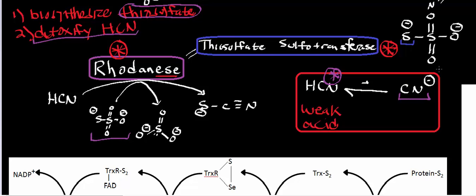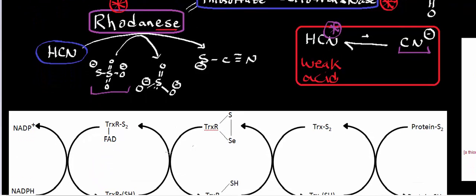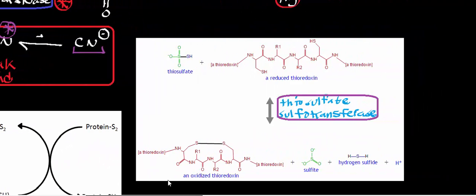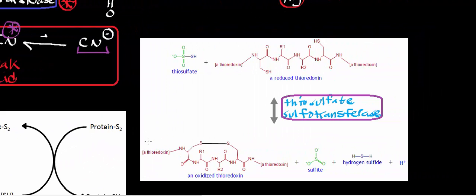It turns out that thiosulfate is really critical for detoxifying hydrogen cyanide. In another video, we'll look at other methods of detoxifying cyanide — things like myoglobin and vitamin B12. But first, let's talk about how we can activate the function of rhodanese in terms of making thiosulfate. It turns out that thiosulfate sulfotransferase, or rhodanese, is thioredoxin-dependent.